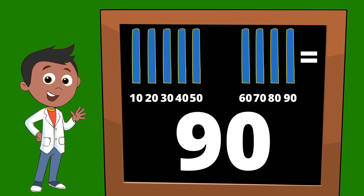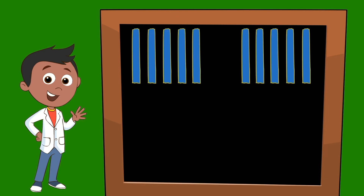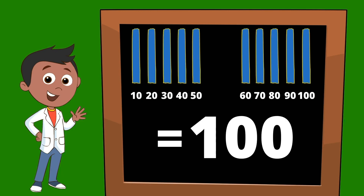Let's add just one more to give us ten ten sticks. Ten ten sticks would be equal to ten, twenty, thirty, forty, fifty, sixty, seventy, eighty, ninety, one hundred. Ten ten sticks would be equal to one hundred.